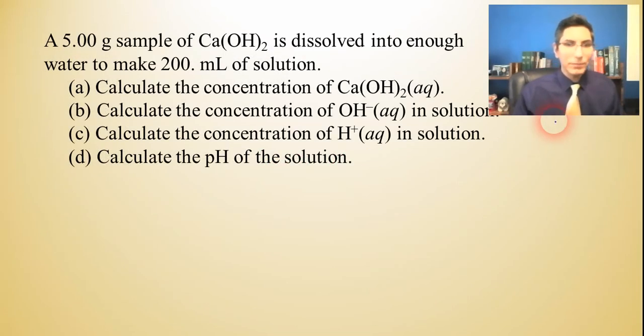Let's try another one. This time we'll have a base. A 5.00 gram sample of calcium hydroxide is dissolved into enough water to make 200 milliliters of solution. We're going to calculate the concentration of calcium hydroxide solution, calculate the concentration of hydroxide ion, calculate the concentration of H+ ions, and find the pH.